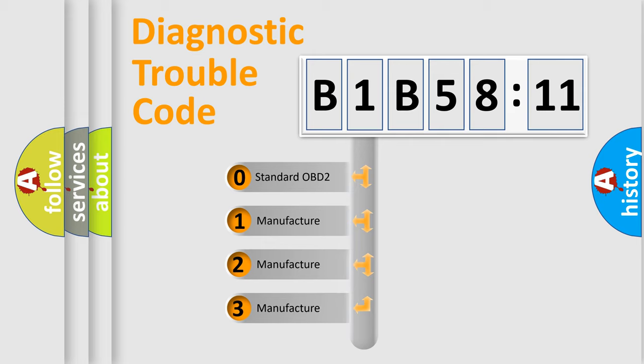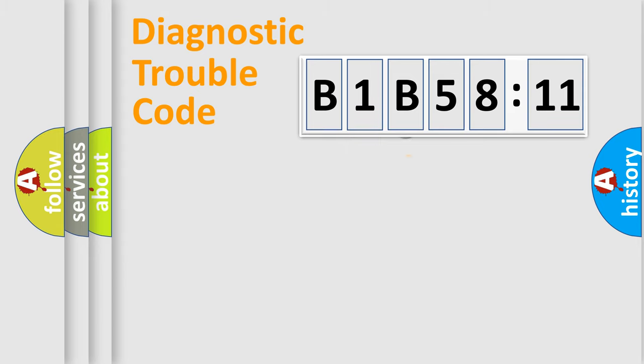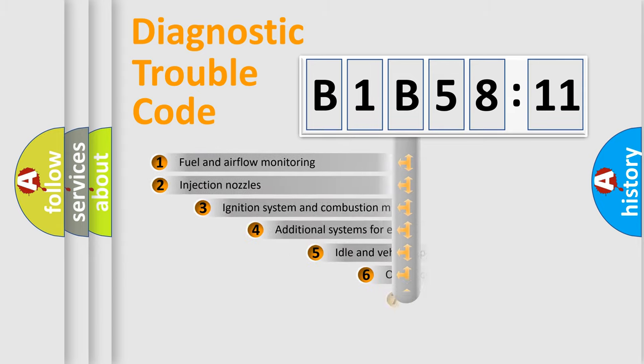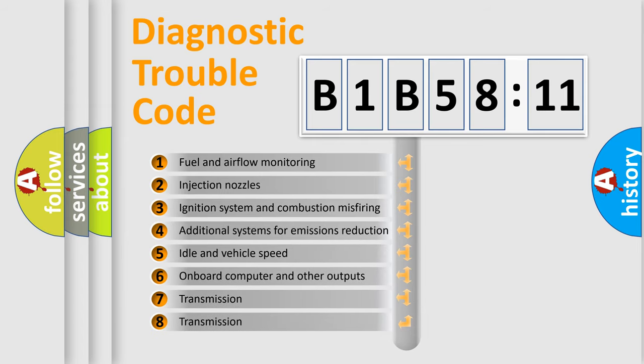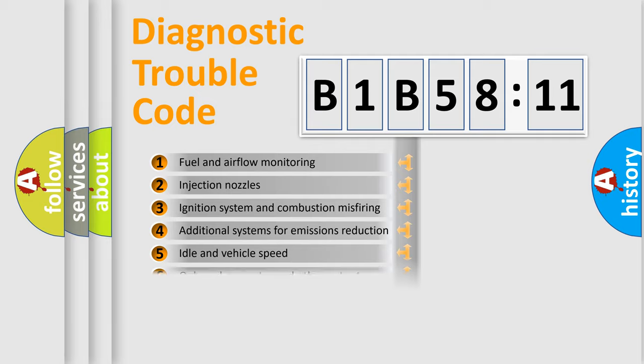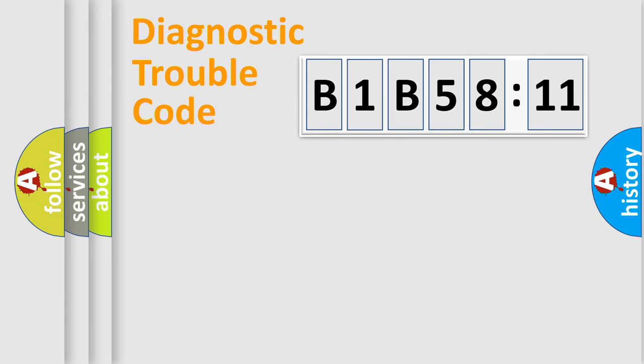If the second character is expressed as zero, it is a standardized error. In the case of numbers 1, 2, 3, it is a car-specific error. The third character specifies a subset of errors. The distribution shown is valid only for the standardized DTC code. Only the last two characters define the specific fault of the group.